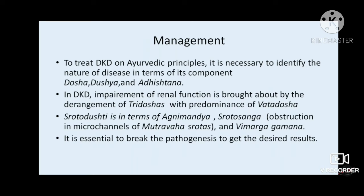For management, we must identify the nature of the disease in terms of dosha, dushya, and adhisthana. We find predominance of vata dosha along with the other doshas. Srotodushti will be in terms of agni mandya, srotosanga — obstructions in micro-channels of mutravaha srotas — and vimarga gamana. We need to break this pathogenesis to achieve good results.